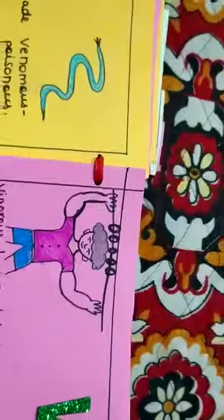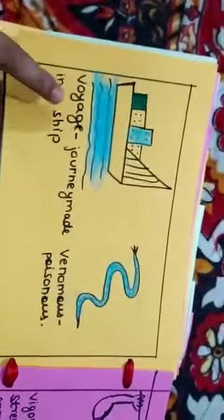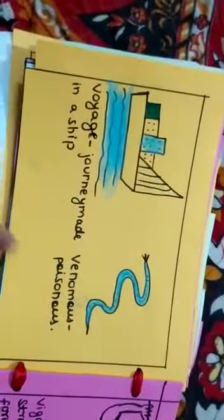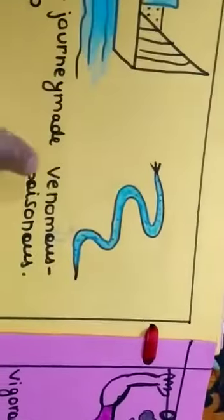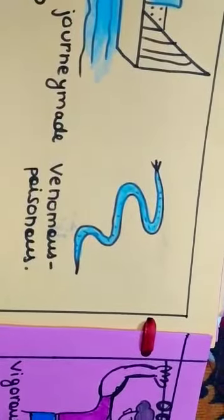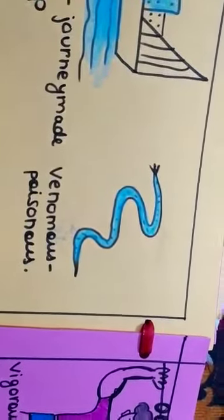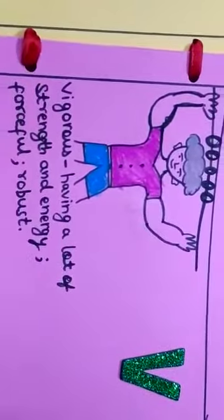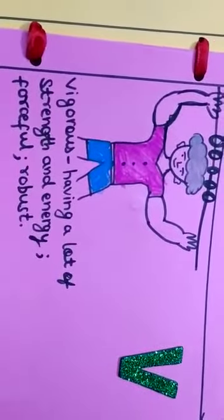Our next alphabet is V. The first word from V is voyage, that is a journey made in a ship. The second word is venomous. For example, snakes are very poisonous, so venomous means poisonous. The third word is vigorous, that is having a lot of strength and energy, and being very forceful and robust.